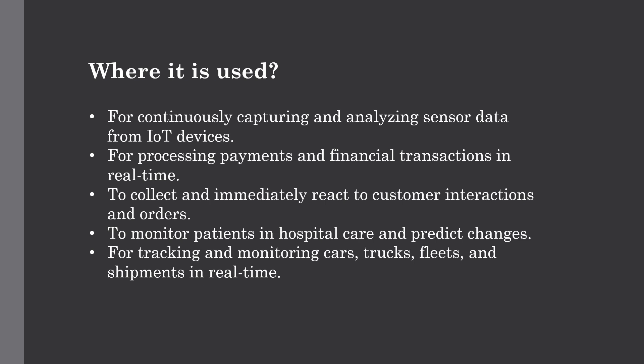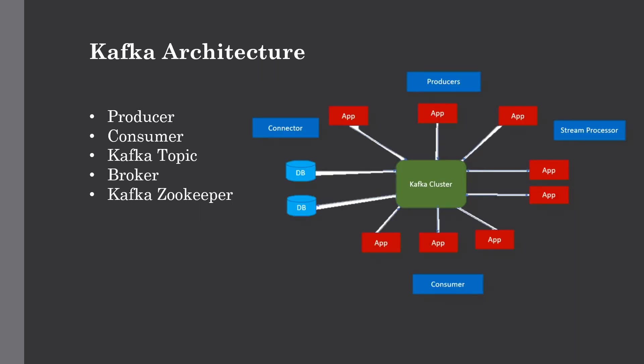Now let's discuss how Kafka works under the hood by covering its architectural components. Kafka is made up of several components: producers, consumers, topics, brokers, and ZooKeeper — and all these components work together to provide a streaming service. As you can see in this figure, producers produce a stream of data and publish it to a Kafka topic present in the Kafka cluster. There is also a connector used for connecting external DBMS to your Kafka cluster, and a stream processor — if your data coming from logs is sparse or not in the expected format, you can use the stream processor to process it as needed. Consumers are used to consume that data.